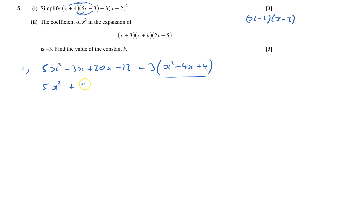So 5x squared, that would be plus 17x minus 12 minus 3x squared, and minus 3 times minus 4 is plus 12x, and minus 3 times plus 4 is minus 12.